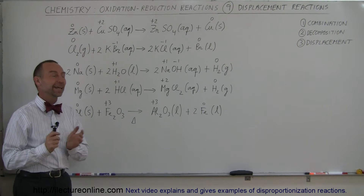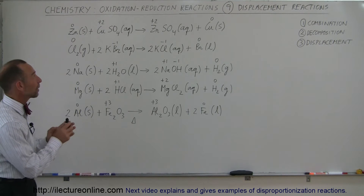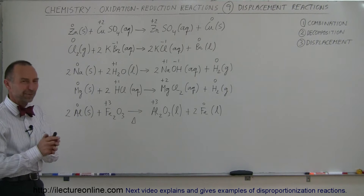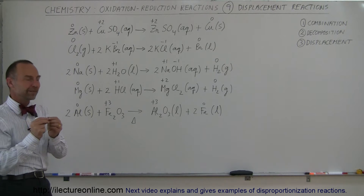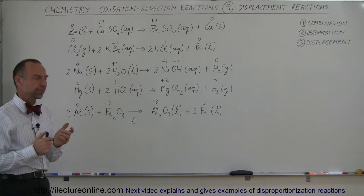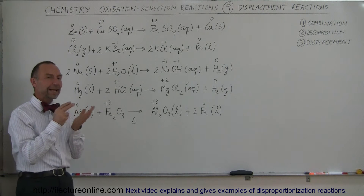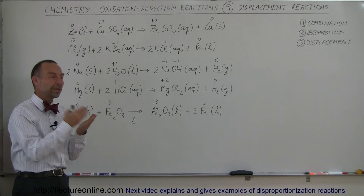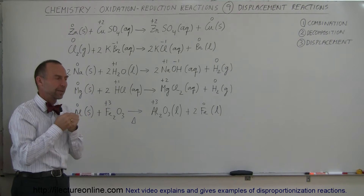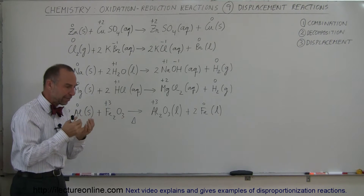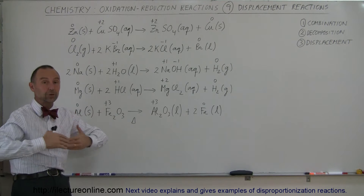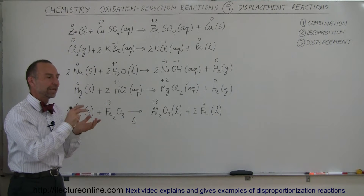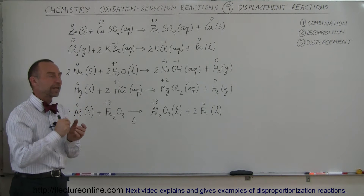Welcome to ElectronLine. Here we're going to talk about our third oxidation-reduction reaction, which is called the displacement reaction, where one element is displacing another element in a reaction. Typically, the reason why that happens is because the element is more or less electronegative. If it's more electronegative, it's more likely to grab electrons; if it's less electronegative, it's more likely to donate electrons, and so there's going to be switching taking place in which element the molecule takes up.